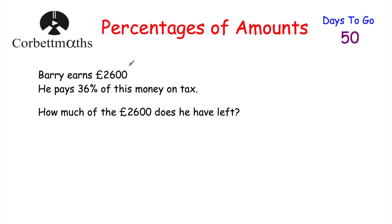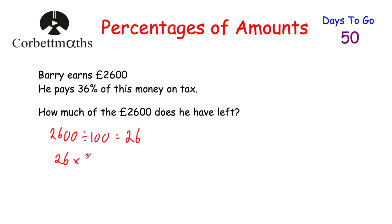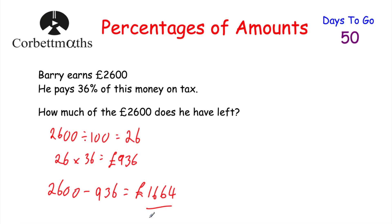For the last question: Barry earns £2,600 but has to pay 36% in tax. How much of the £2,600 does he have left? Divide £2,600 by 100 to find 1%, which is £26. Multiply £26 by 36 to find 36%: 26 times 36 equals £936 — that's the amount paid in tax. Then £2,600 minus £936 equals £1,664. That's how much money Barry has left.